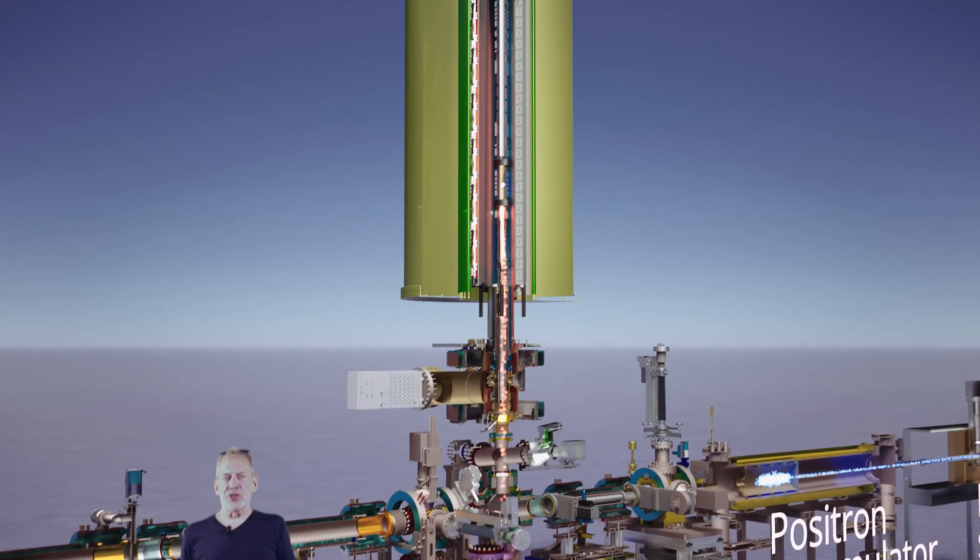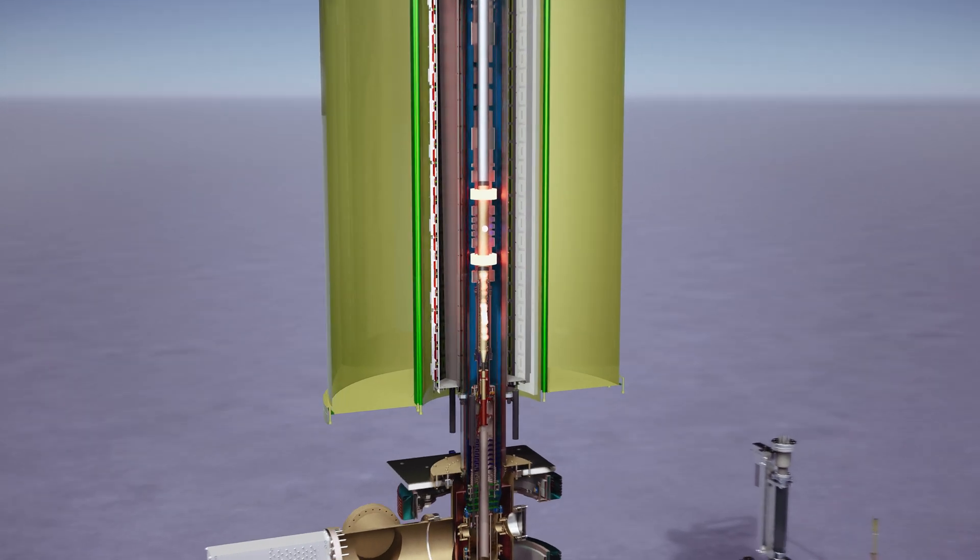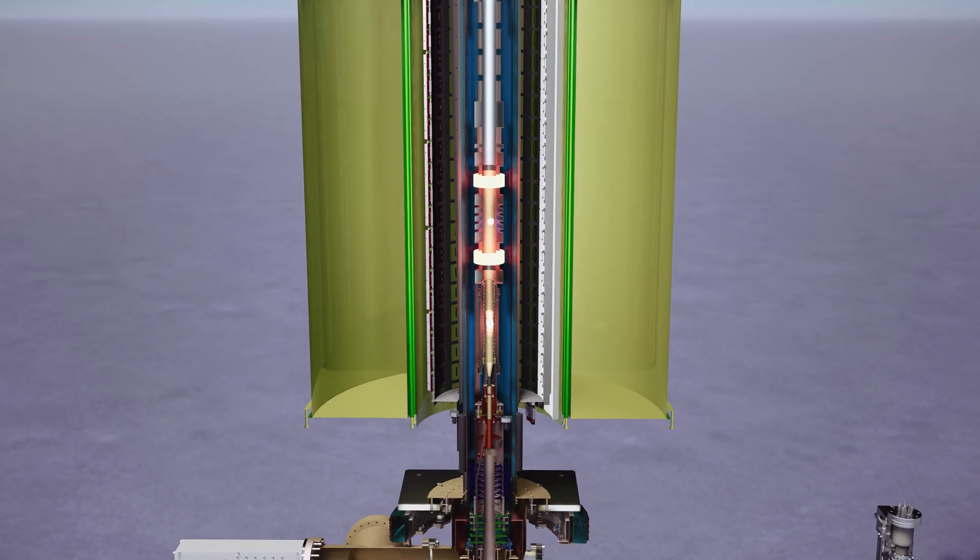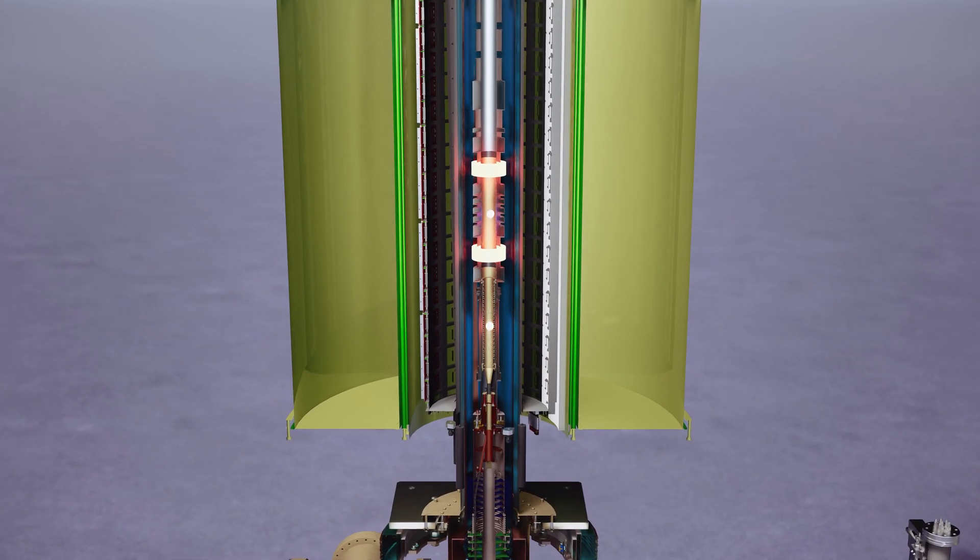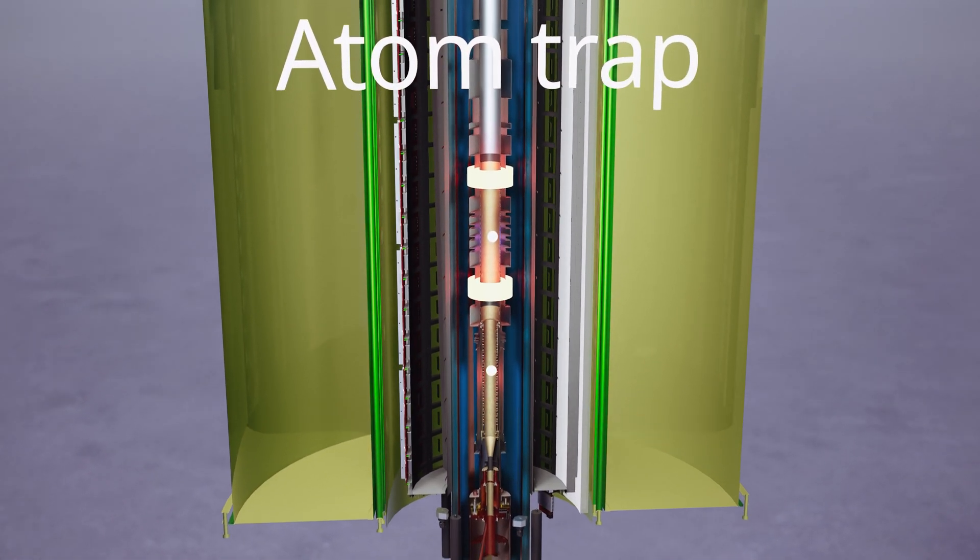After some manipulations, we have a cloud of antiprotons and a cloud of positrons, and we want to make antihydrogen inside what we call the atom trap, which is a magnetic bottle that will hold onto the neutral antihydrogen atoms.